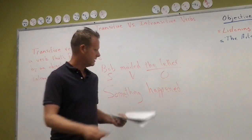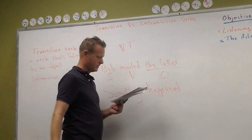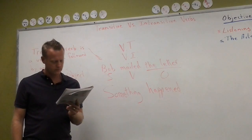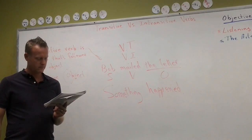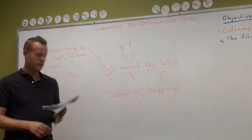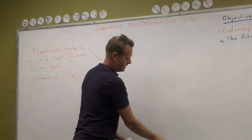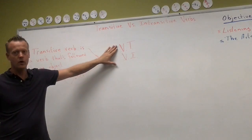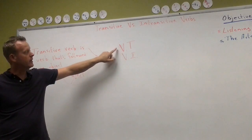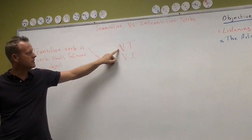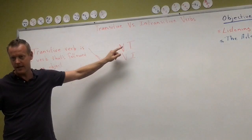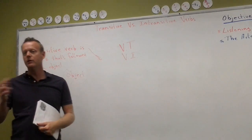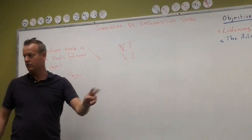The usual abbreviations are VT for transitive and VI for intransitive. Some verbs have both transitive and intransitive uses. For example, transitive: 'Students study books.' Intransitive: 'Students study.' So the only way to know for sure is to look in a dictionary. VT means verb transitive — it needs an object. VI means verb intransitive — it shouldn't have an object. Some verbs like 'study' can be used both ways, and the dictionary will show both VT and VI with examples.